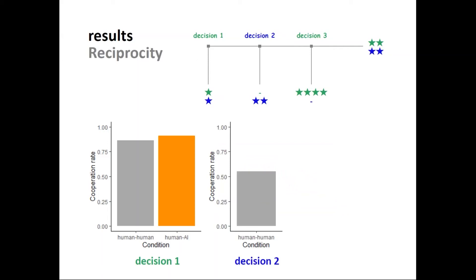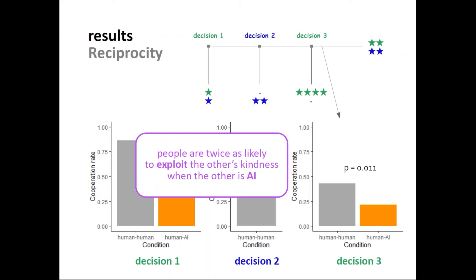In the role of player blue, we only collected data in human-human interaction, because when humans interact with AI, we were only interested in humans in the role of player green — in the decision to exploit or not exploit a kind other. Just over half of humans in the role of player two are kind toward their co-player when interacting with other humans. At the last decision node, when people interact with other people, nearly half repay kindness with kindness and do not exploit a kind other. But people are twice as likely to exploit the other's kindness when they interact with the machine compared to when they interact with a human — a sharp drop in cooperation.